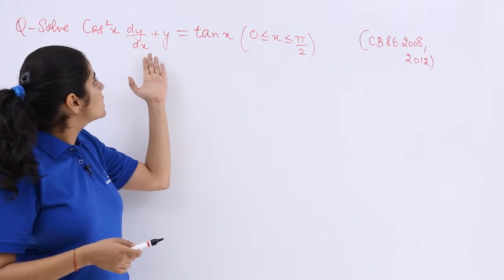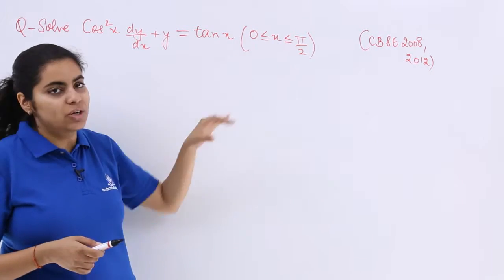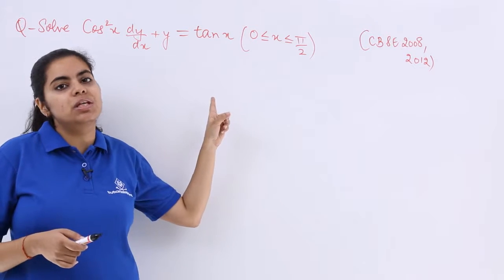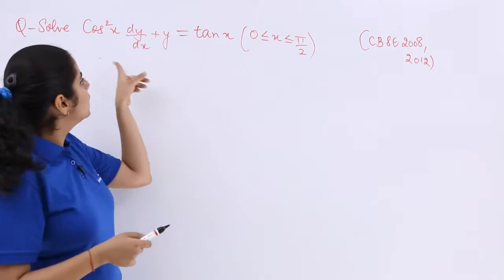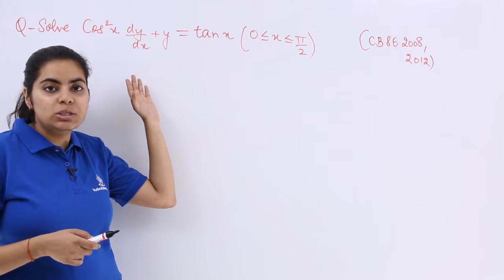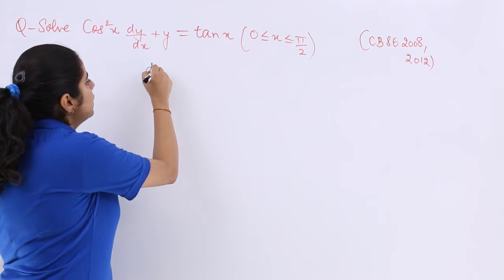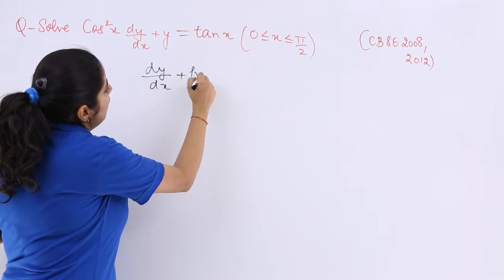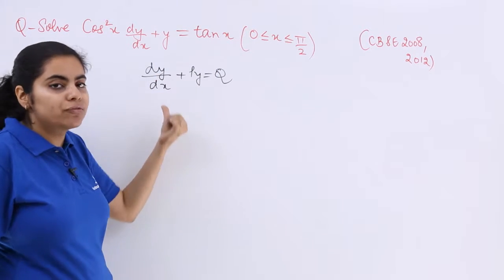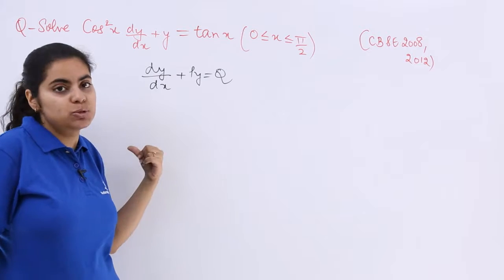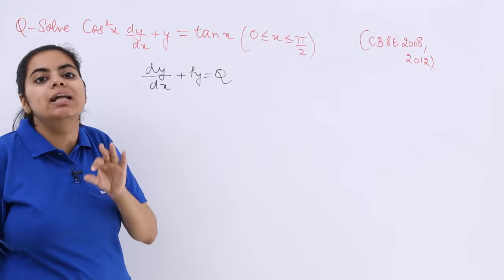The question says cos²x dy/dx + y = tan x, with x in a given range. One thing to understand is you cannot proceed directly with the linear equation form, because cos²x is multiplied and does not fit the general form. The general form is dy/dx + Py = Q, where there is nothing in the coefficient of dy/dx except 1, but here it is cos²x. So you cannot proceed with the solution directly.